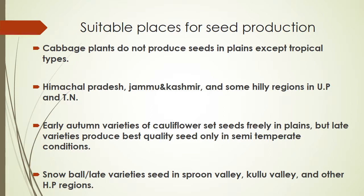Suitable places for seed production of cole crops: cabbage plants do not produce seeds in plains except tropical types. Suitable regions include Himachal Pradesh, Jammu and Kashmir, and some hilly regions in Uttar Pradesh and Tamil Nadu. Early autumn varieties of cauliflower set seeds freely in plains, but late varieties produce best quality seeds only in semi-temperate conditions. Snowball or late varieties seed in Spoon Valley, Kullu Valley, and other HP regions.